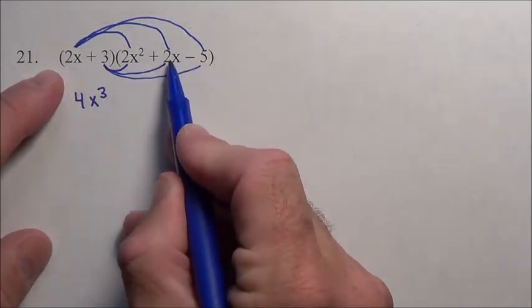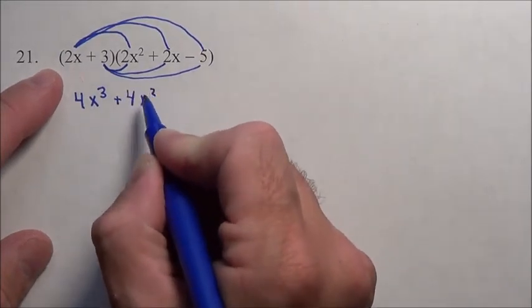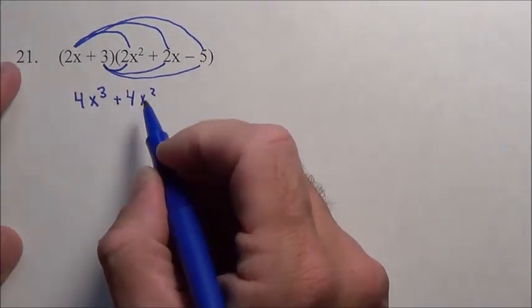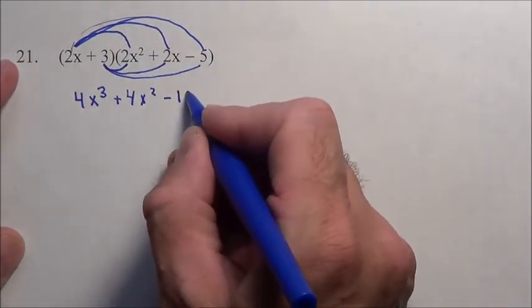Now 2x times this 2x, that's going to be 4x squared because an x times x is x squared. And then finally 2x times that minus 5 is going to be negative 10x.